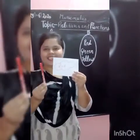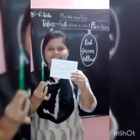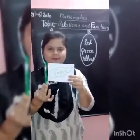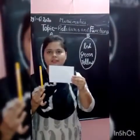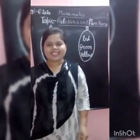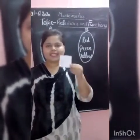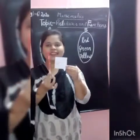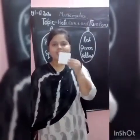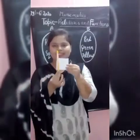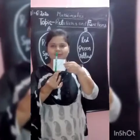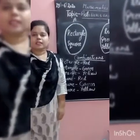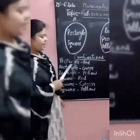Let's see the possibilities. Rectangle with red color. Rectangle with green color. Rectangle with yellow color. Now let's take another element — square. Square with red color. Square with yellow color. Square with green color. In this way, you can see we made six combinations.